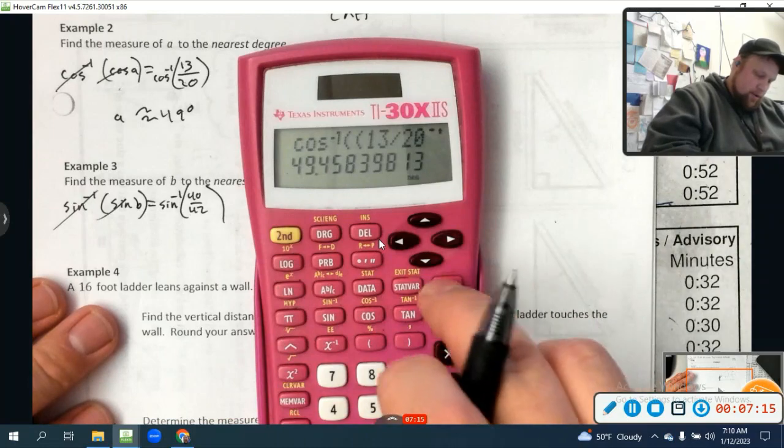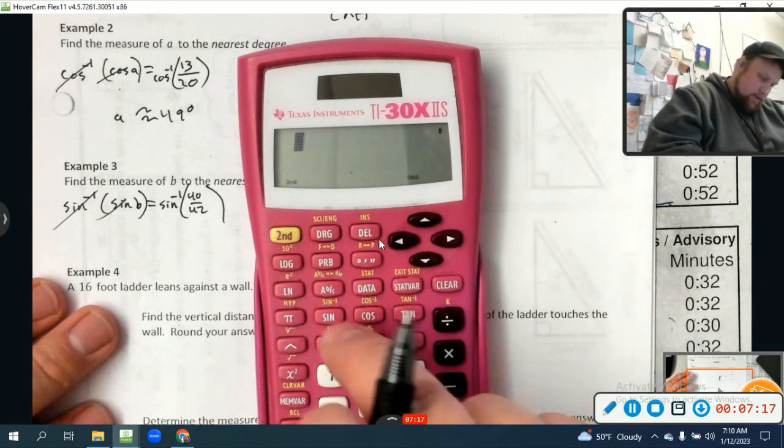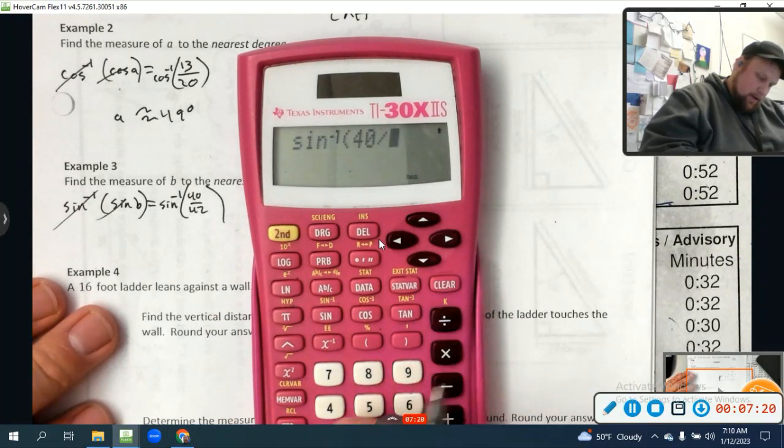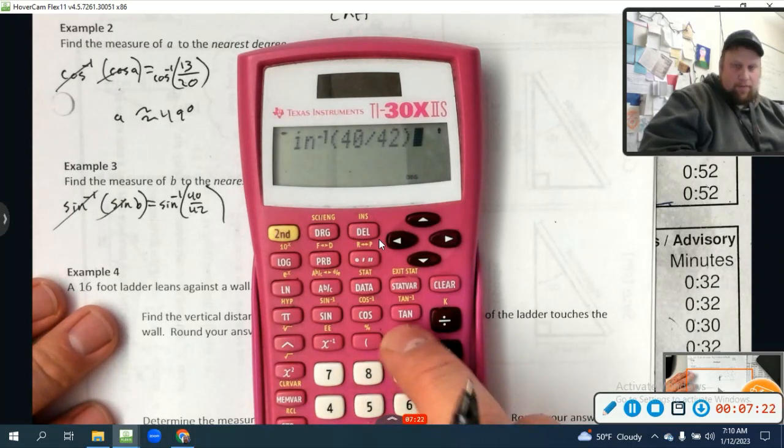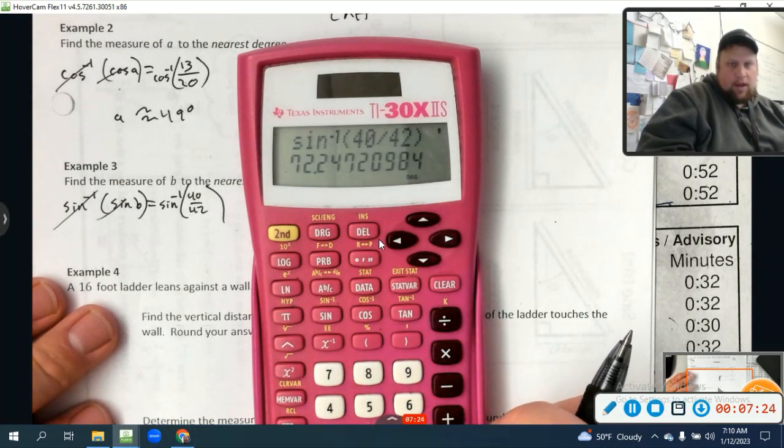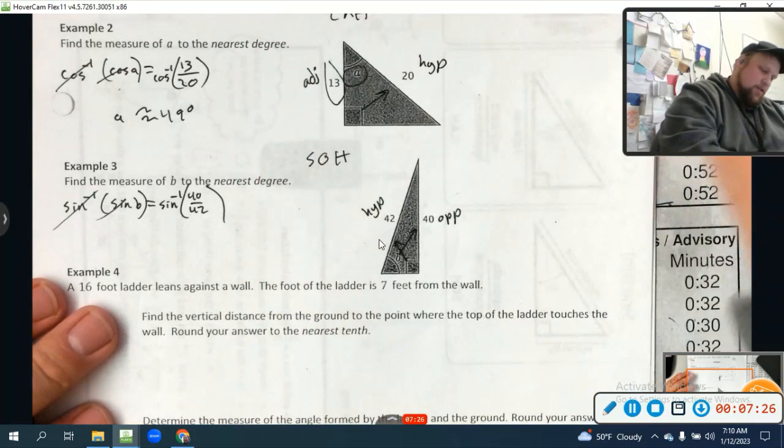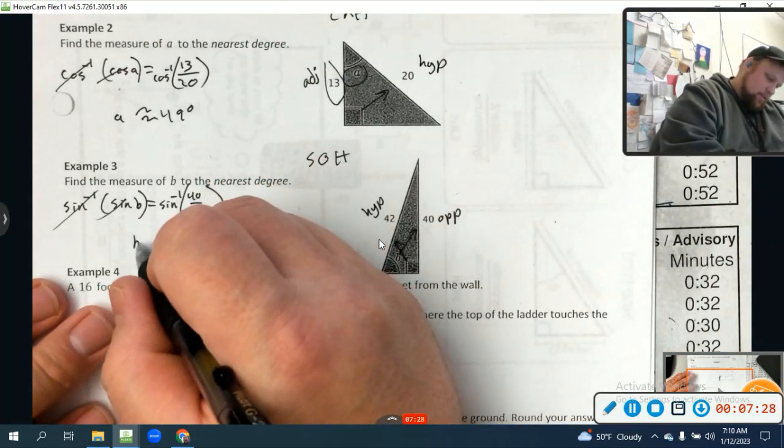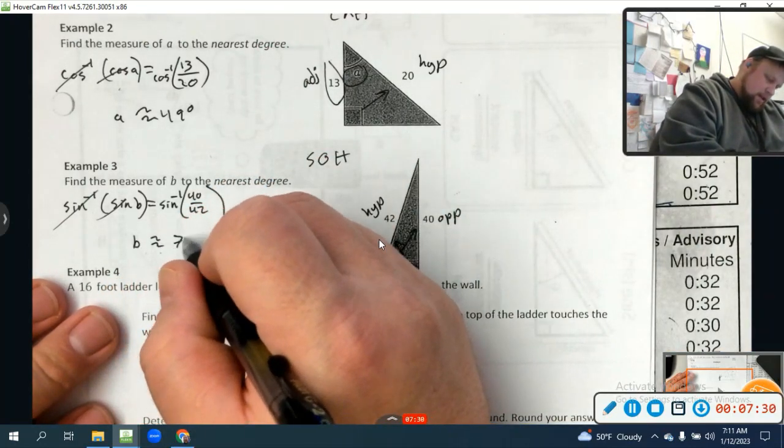And it says to the nearest degree again. So second function inverse sine of 40 divided by 42. That is approximately 72 degrees. So B is approximately 72 degrees.